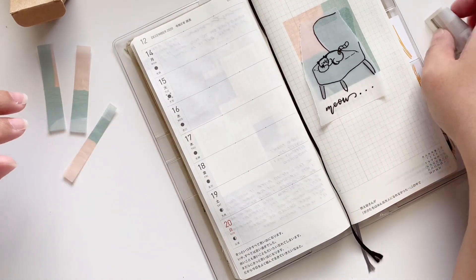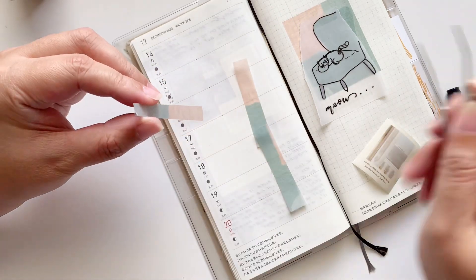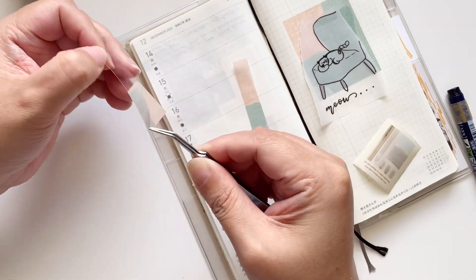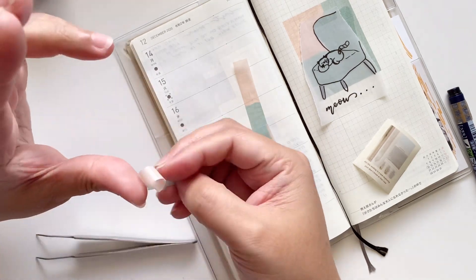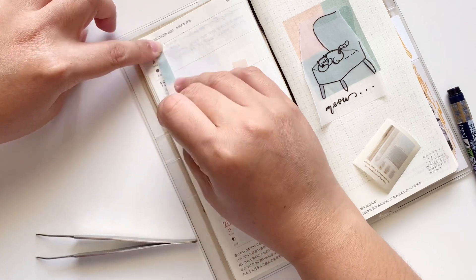That is the right page done. Now I'm going to go ahead and put down the washi sticker strips that I saved and I'm just going to randomly line them up on the side right next to the dates.